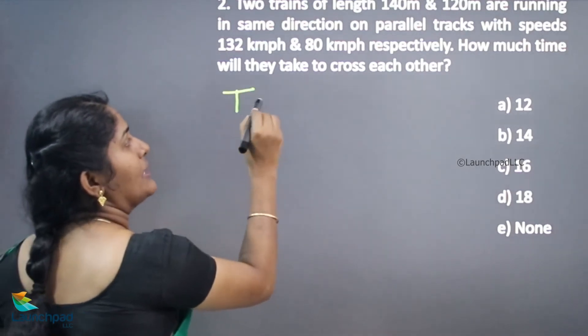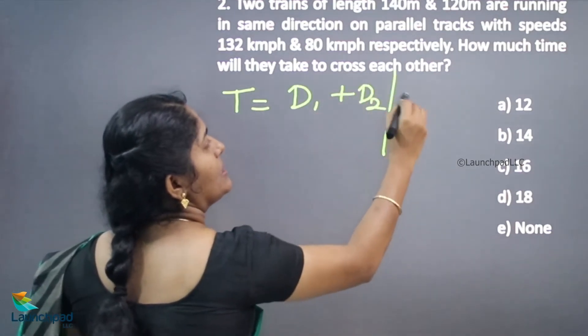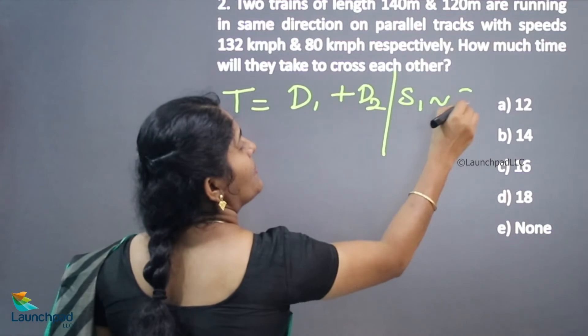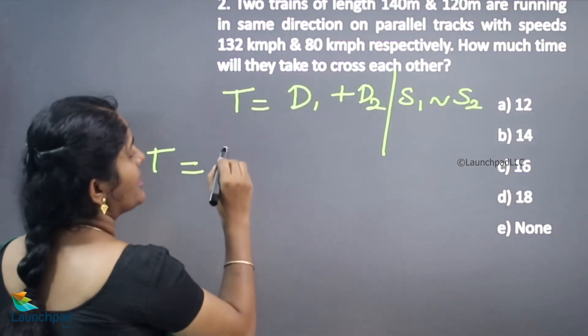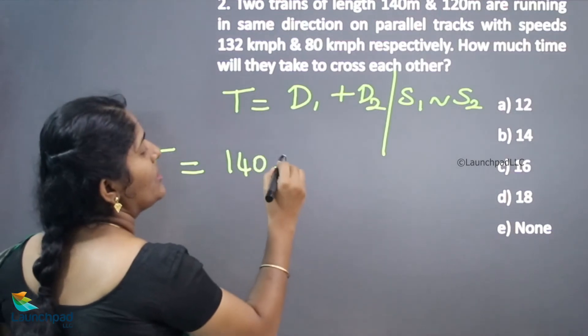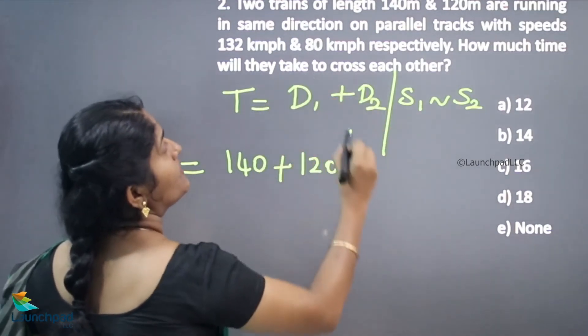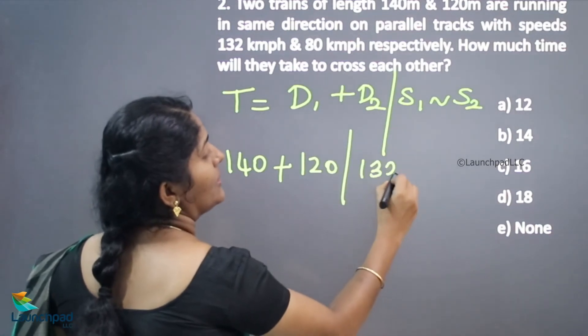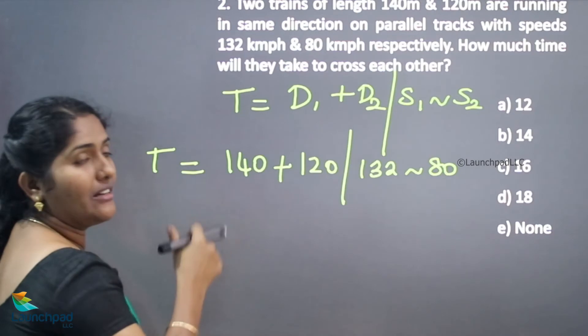So time is equivalent to distance of train 1 plus distance of train 2 divided by speed of train difference speed of 2. What is your distance? First train distance 140, second train distance 120, divided by what is your speed of train 1, 132, difference 80.